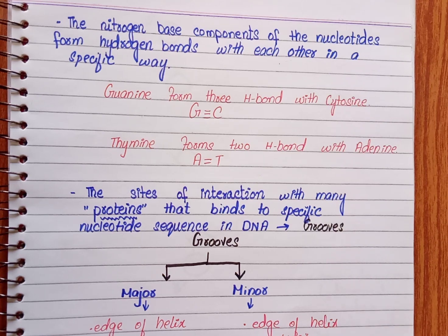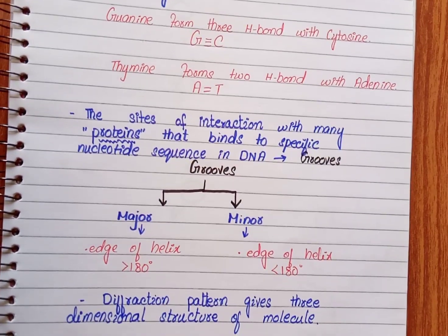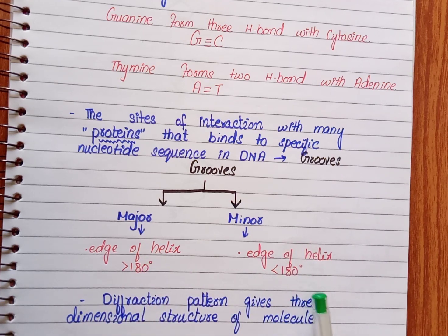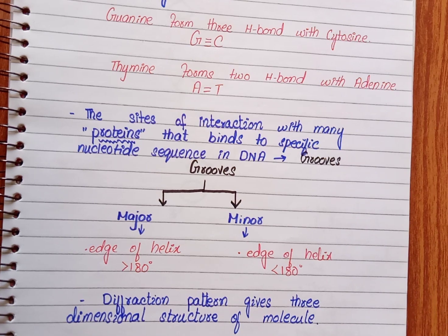In DNA there are two types of grooves: the major groove and the minor groove. The major groove is where the edge of the helix spans greater than 180 degrees, and the minor groove is less than 180 degrees. These two grooves are important for interactions with many proteins. X-ray diffraction gives the three-dimensional structure of the DNA molecule. In summary, the secondary structure consists of a double helix with nitrogenous base pairing — guanine forms 3 hydrogen bonds with cytosine, and adenine forms 2 hydrogen bonds with thymine.